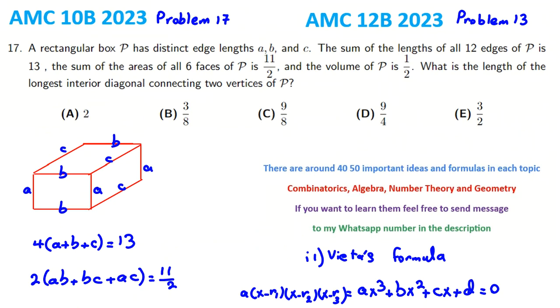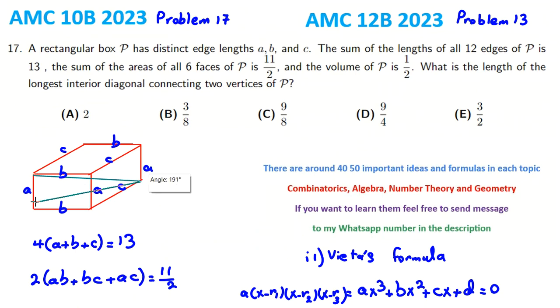To find the longest diagonal, let's call this distance d. We can use the Pythagorean theorem: d² = a² + y², where y² = b² + c².